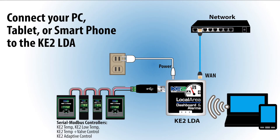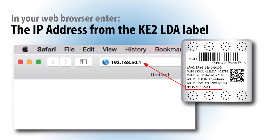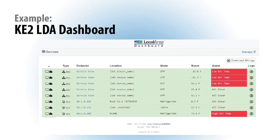To access the LDA dashboard, connect your PC, tablet, or smartphone to the device. Then, in your web browser's address bar, enter the IP address from the label. You are now connected to the local dashboard, and it will display up to 10 controllers also on the network.